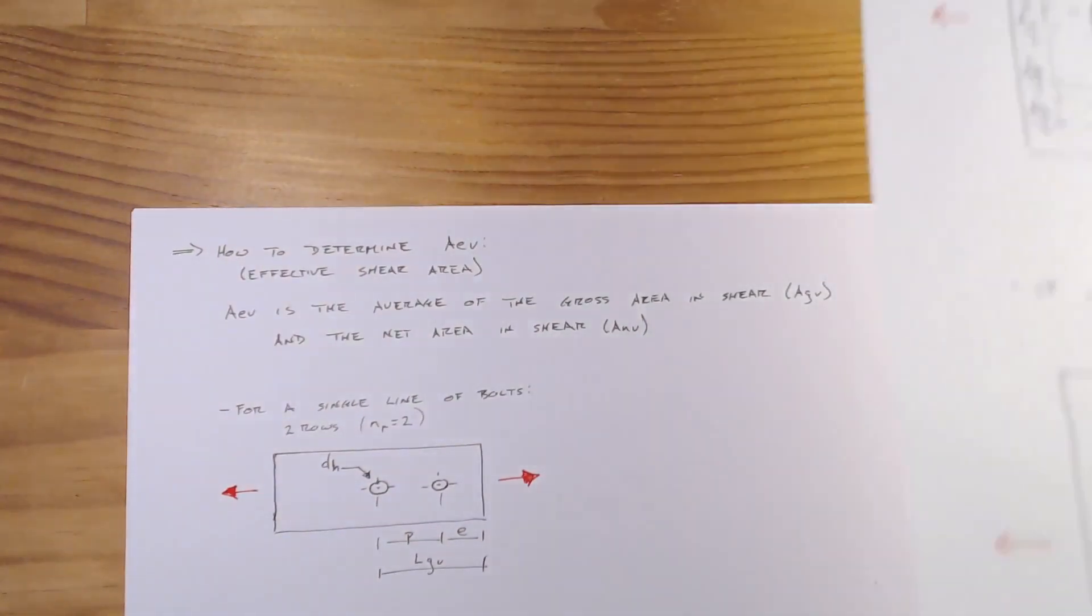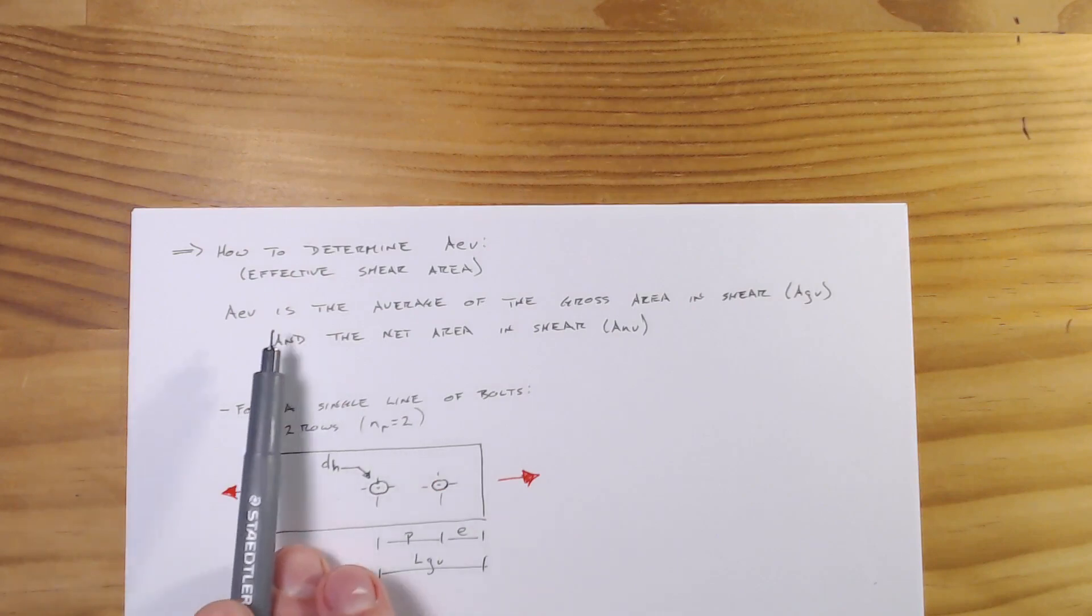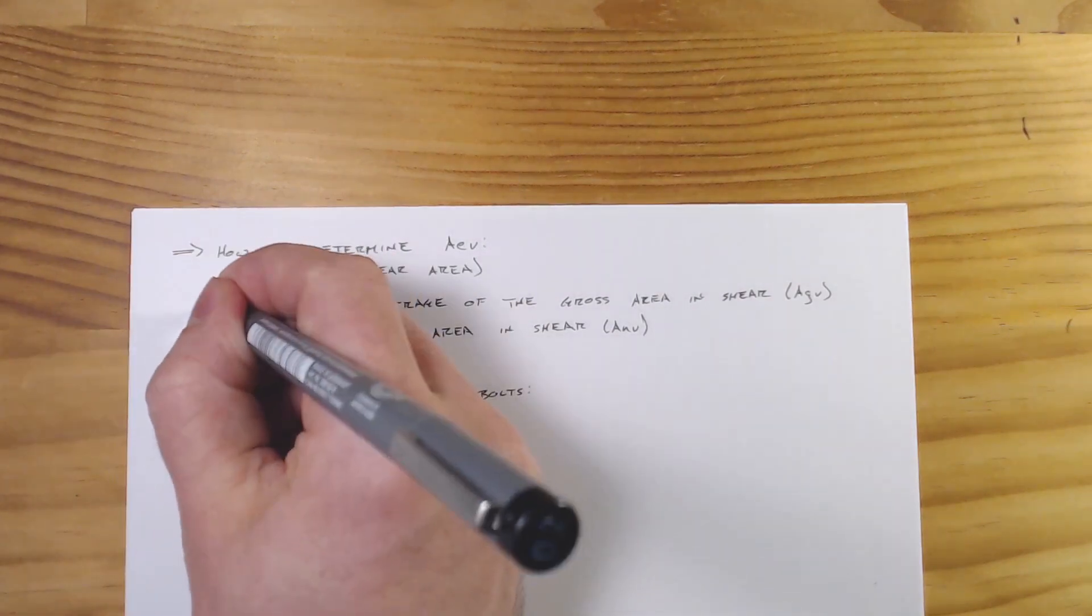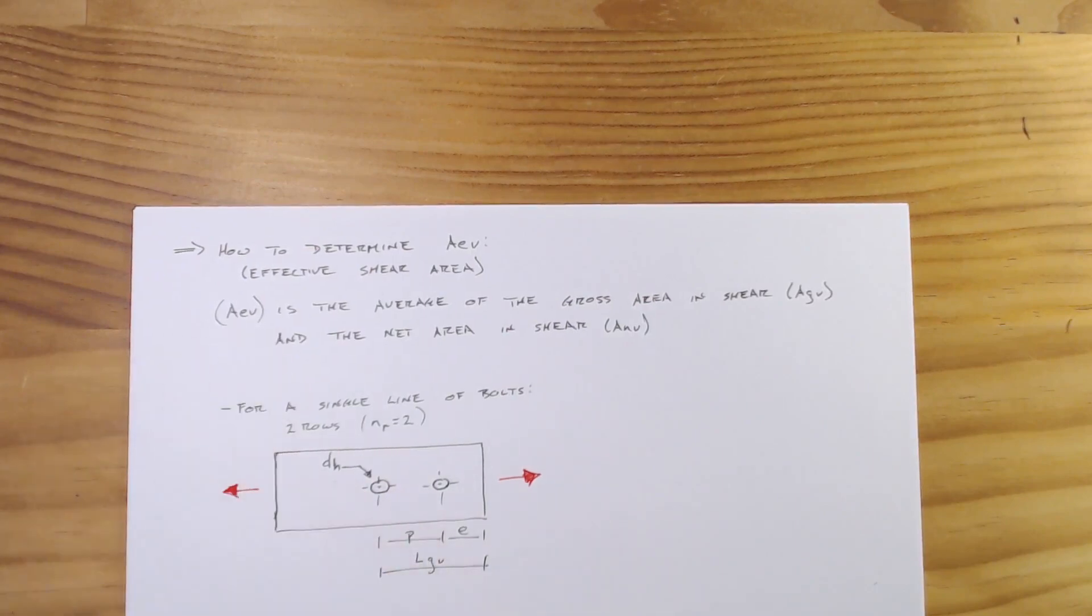And so I have a few examples for that. Now, the thing with effective shear area, we'll just put this in brackets just to make sure it sort of pops out there: effective shear area is going to be the average of the gross area which is acting in shear and the net area which is acting in shear. And so I think this is easiest to look at it via examples.